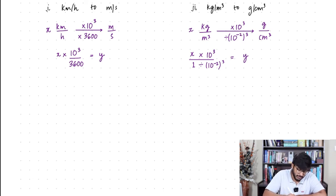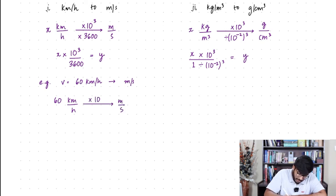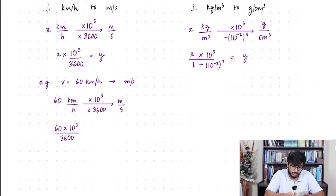Let's try a number. If the velocity of an object is 60 km/h, converting to m/s: 60 × 10³ ÷ 3,600 = 16.7 meters per second.